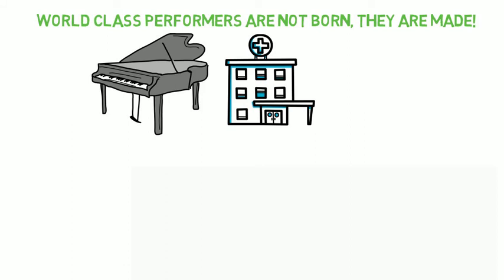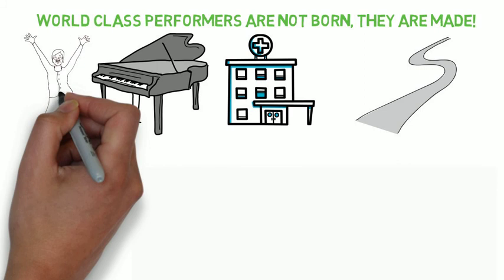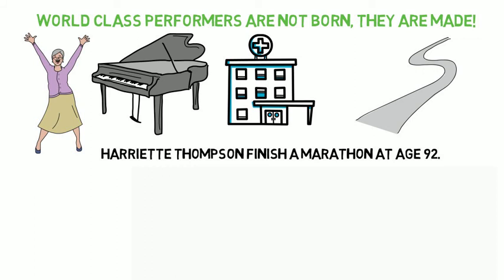Here's the final takeaway. Harriet Thompson, the cancer survivor, sets a record as the oldest person to complete a marathon at age 92. It is never too late to become a world-class performer.